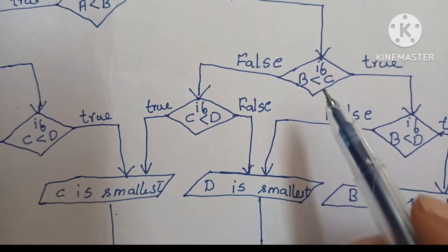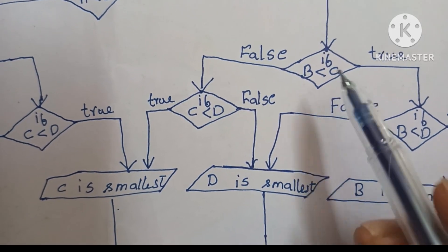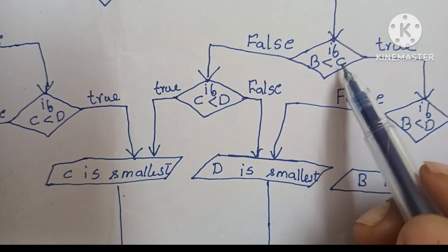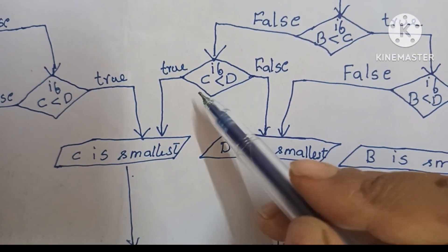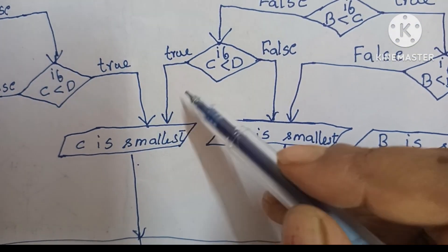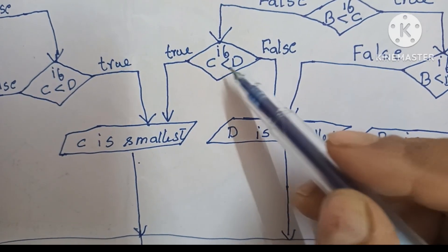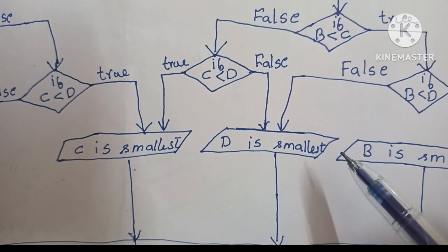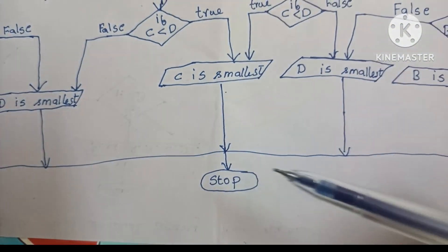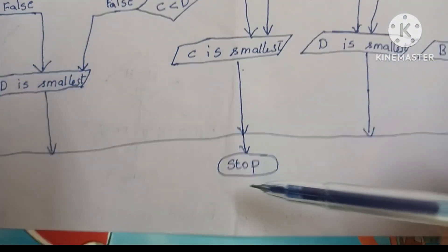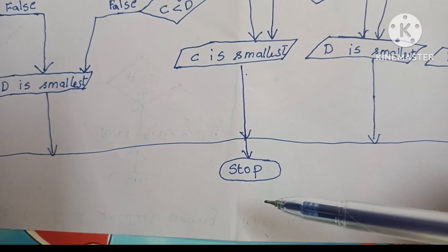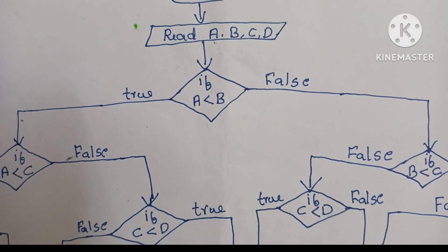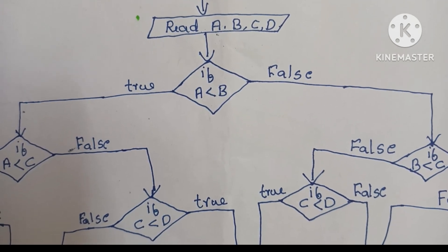If B less than C is false, C may be smallest. We compare C with D. If C less than D is true, we print C is smallest. If C less than D is false, we print D is smallest. Finally, all outputs combine to the stop statement. Thank you for watching — if you like my video please like and subscribe. All the best!